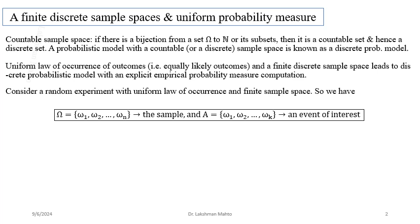If the sample space is finite then an event, which is always a subset of the sample space, would by default be finite. Suppose A is an event containing k number of outcomes: omega_1, omega_2, up to omega_k. When we have a finite structure of sample space, we come up with sample space and event through the first two basic concepts.